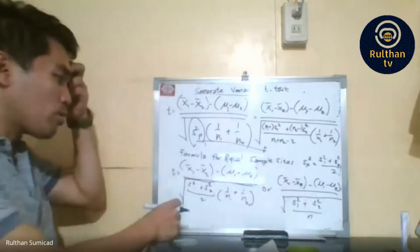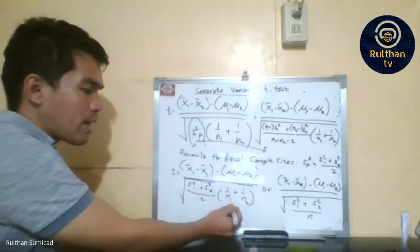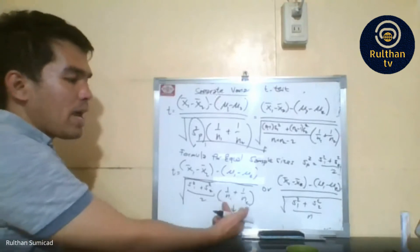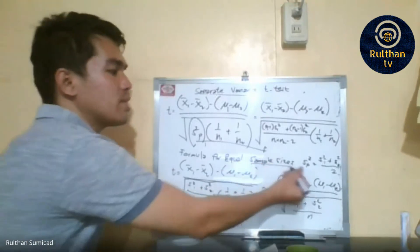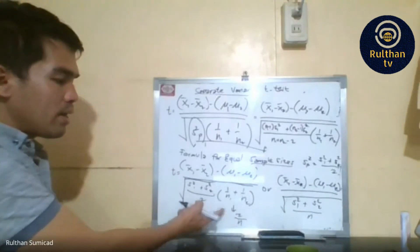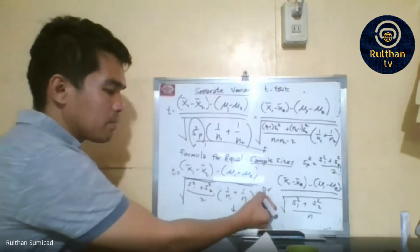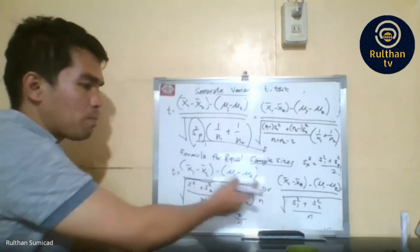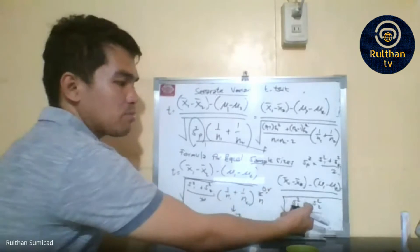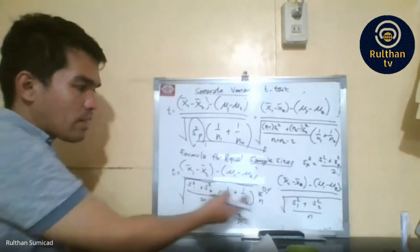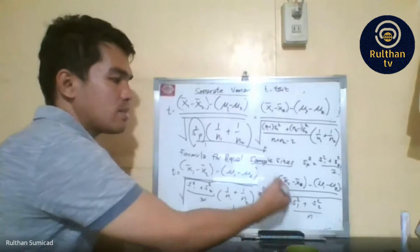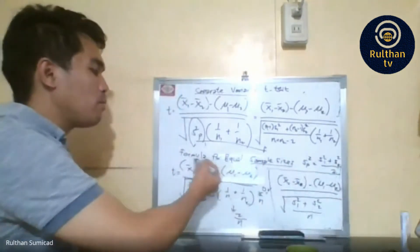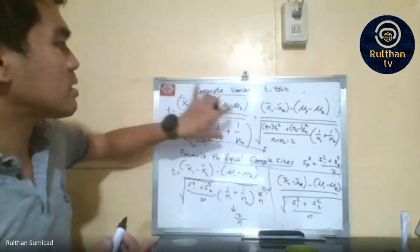Once you multiply, you get 2 over N; the 2 cancels with the 2 in the denominator of the pooled variance, giving the simplified formula for equal sample sizes. If sample sizes are not equal, we stick to the general pooled variance formula.